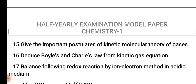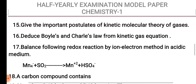Question number 17: Balance the following redox reaction by the ion electron method in acidic medium. MnO4 minus plus SO2 gives rise to Mn2 plus and HSO4 minus.